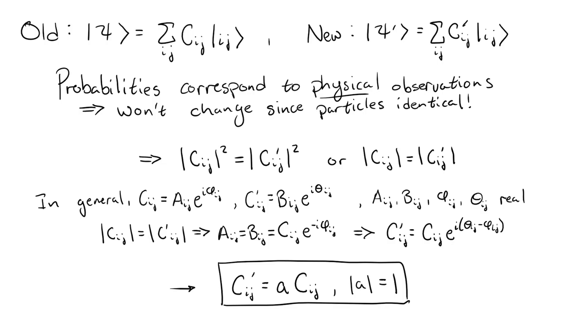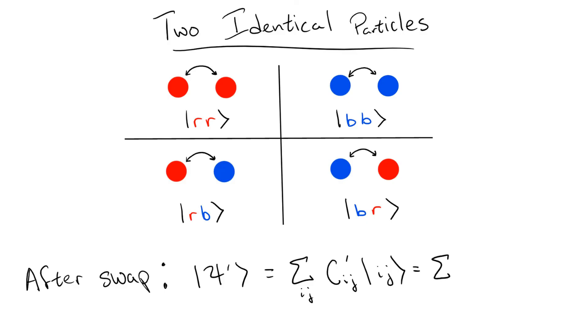So our new state is written in terms of the old constants as psi prime is equal to the sum over i j times a times c i j times the i j state.